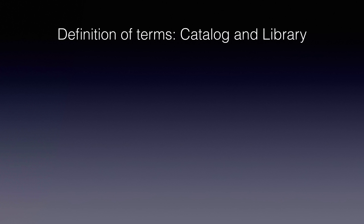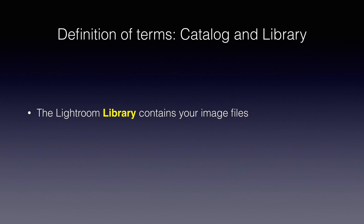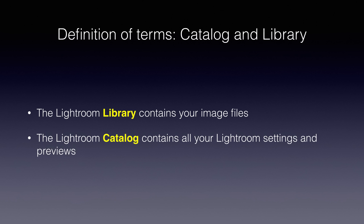First, I'd like to define a couple of terms: the Lightroom catalog and the Lightroom library. The Lightroom library is your image files — it's a folder or folders that contain all your images. The catalog is something different. It's usually in a folder and contains a catalog file plus other files and folders that keep all the settings you do in Lightroom — your previews, smart previews, presets, collections, and things like that. I'd like to back up both the library and the catalog so that if anything ever happened, I could restore them and start right where I left off.